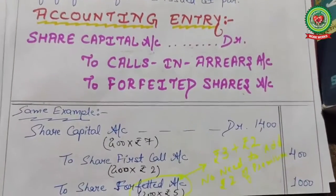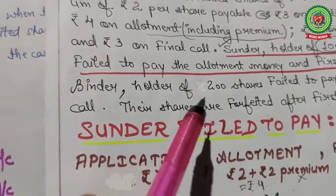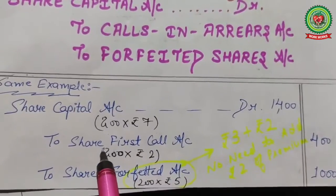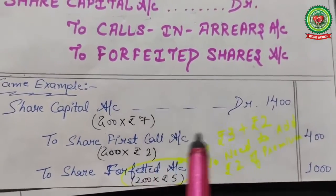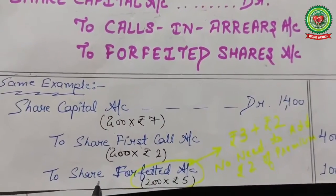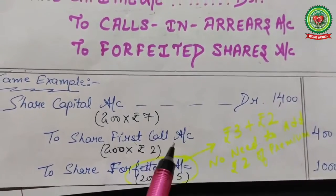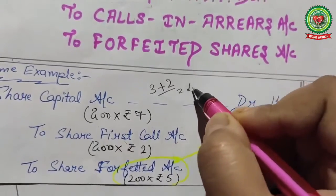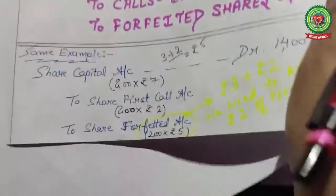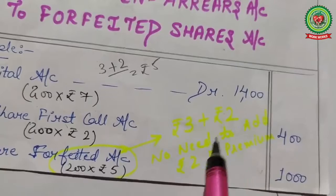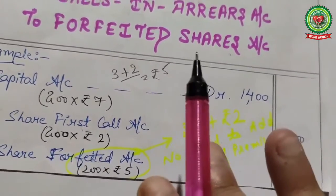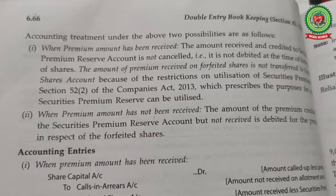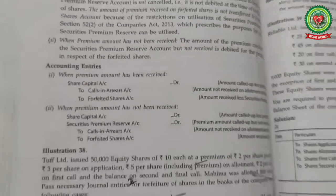Continuing with Binder's example (200 shares, forfeited after first call, first call not paid): Share Capital Account Dr. 200 × 7 = rupees 1400; To Share First Call Account 200 × 2 = rupees 400 (calls in arrears); To Share Forfeited Account 200 × 5 = rupees 1000. The amount received is rupees 5 per share — rupees 3 application + rupees 2 allotment = rupees 5. No need to include the premium amount of rupees 2 as it has already been settled in a separate premium account.